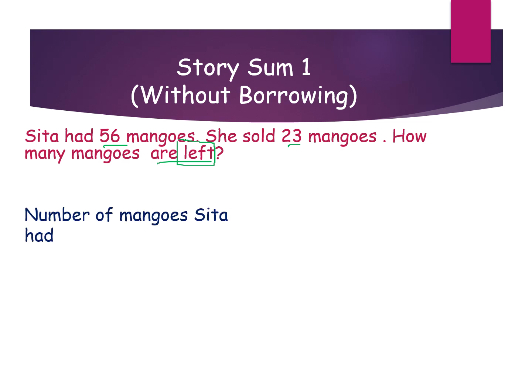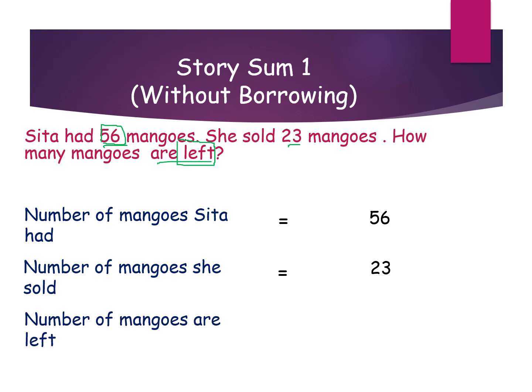Here are the sentences. Number of mangoes Sita had: 56. How many sold? 23. Number of mangoes she sold: 23. What they are asking: how many mangoes are left? Number of mangoes left. Now, what is the symbol of subtraction? Minus.